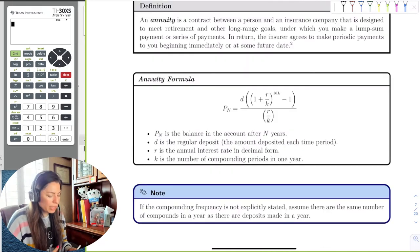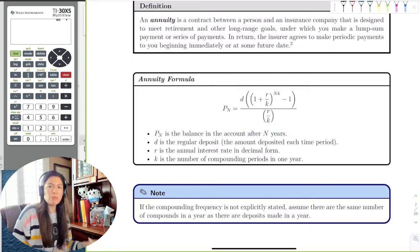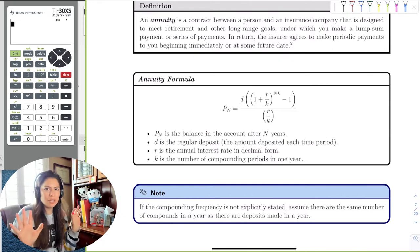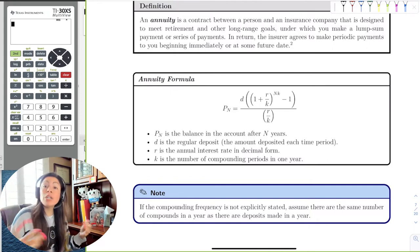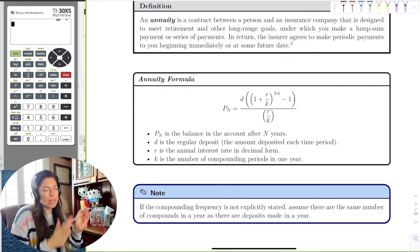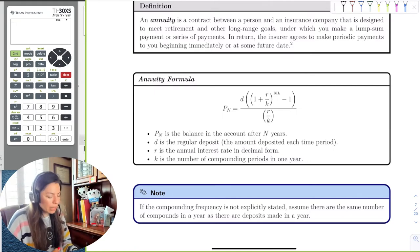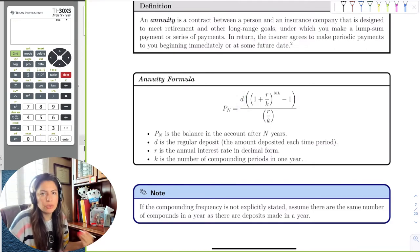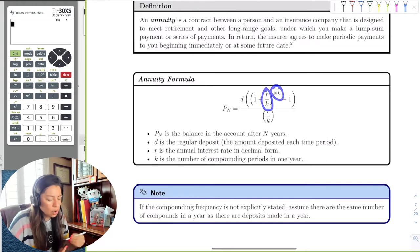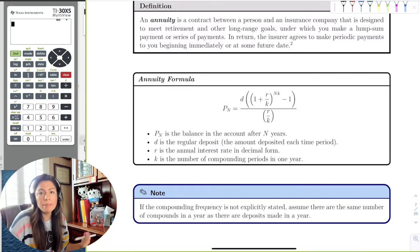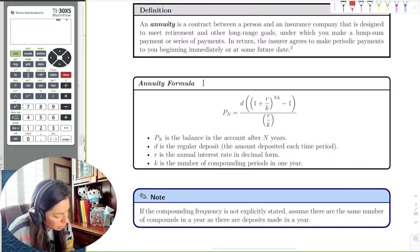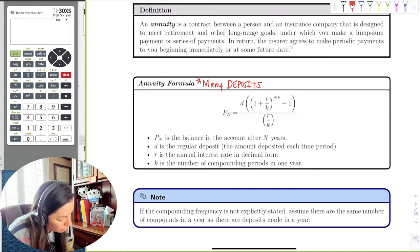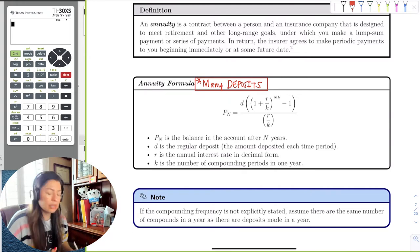So an annuity is a contract between a person and an insurance company or financial institution that is designed to meet retirement or long-range goals. You make a lump sum payment or a series of payments. In this case, in this book, in this class, we're going to make a series of payments with annuity. The only difference now is we can't put P sub zero here because it's not a one deposit thing. I'm making many deposits.